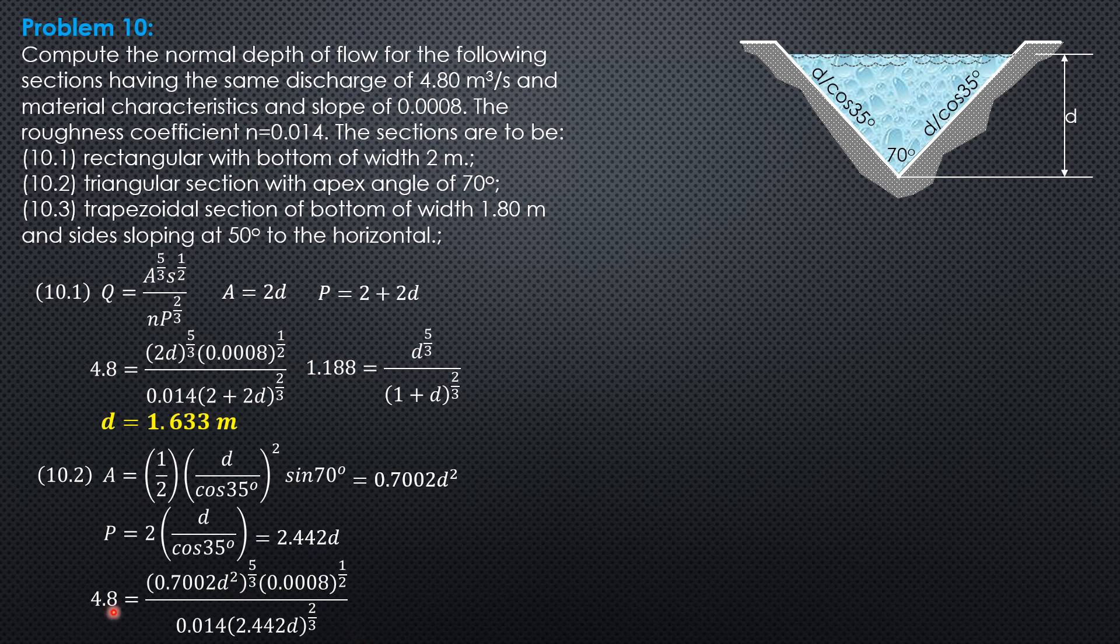We can solve this easily. 4.8 times 0.014 times 2.442 to the 2 thirds divided by 0.7002 to the 5 thirds divided by 0.0008 to the 1 half. Simplifying, that's 7.803 equals D to the 8 thirds.